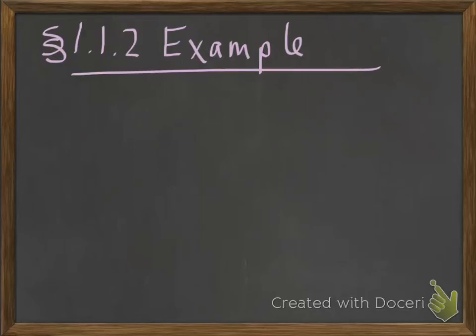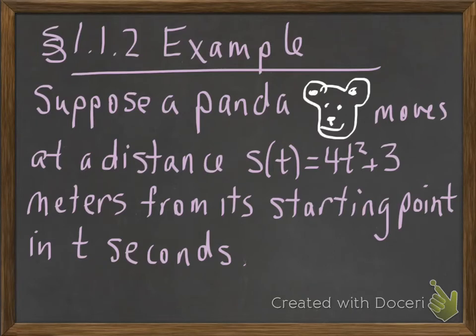This is the second video for section 1.1, and this is where we're going to do an example of calculating average velocity. So let's suppose that a panda moves at a distance s(t) given by the equation 4t² + 3 meters from its starting point in t seconds.